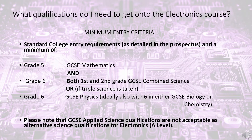What qualifications do I need to get onto the electronics course? The minimum entry criteria are standard college entry requirements as detailed in the prospectus: grade five in GCSE mathematics, and either grade six for both first and second grade GCSE combined science, or if triple science is taken, grade six in GCSE physics, ideally also with grade six in either GCSE biology or chemistry. Please note that GCSE applied science qualifications are not acceptable as alternative science qualifications for electronics A-level.